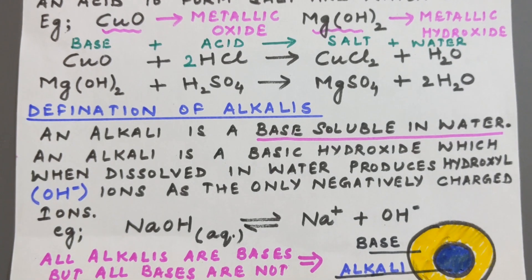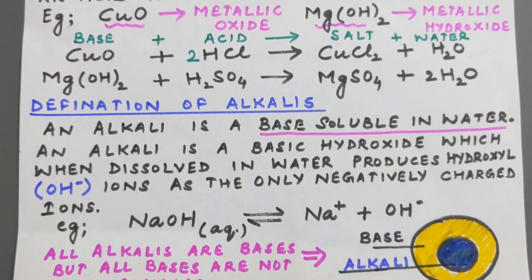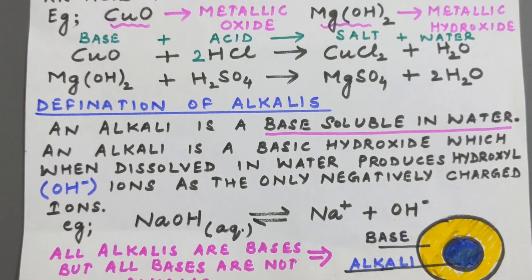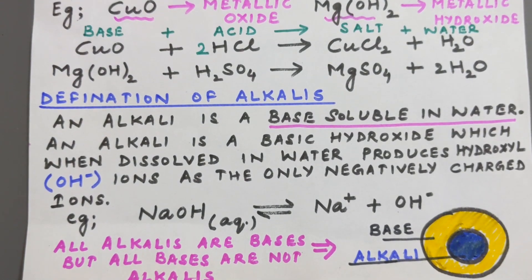Now let us try and understand what are alkalis. Now those bases, that means those oxides or hydroxides of metals which are soluble in water are known as alkalis. So what is an alkali? It is a base soluble in water.